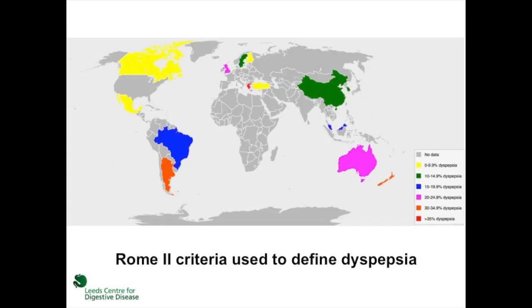Finally, even when the more rigorously defined Rome 2 criteria were used to define the presence of uninvestigated dyspepsia, the prevalence varied considerably between countries.